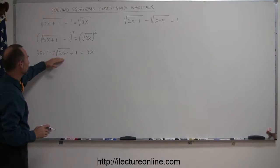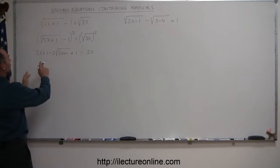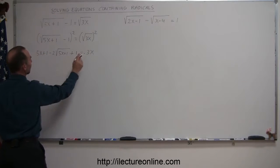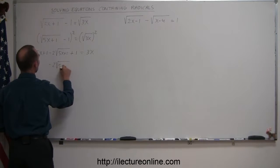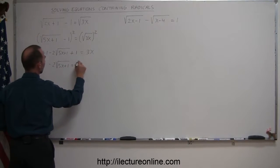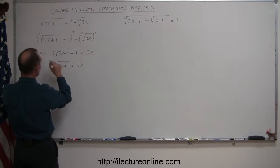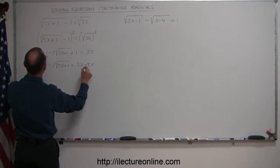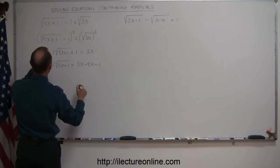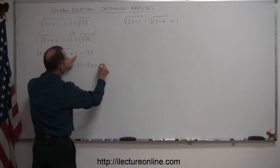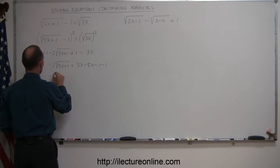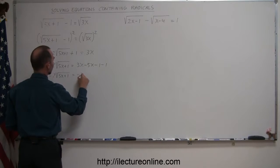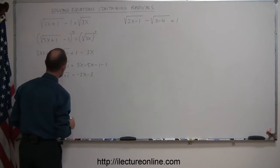I'm going to keep the minus 2 times the square root of 5x plus 1 on the left side and move everything else to the right side to isolate it. So we get minus 2 times the square root of 5x plus 1 equals 3x, and moving the 5x across gives minus 5x, and moving the plus 1 across gives minus 1. Combining like terms: minus 2 times the square root of 5x plus 1 equals minus 2x minus 2.